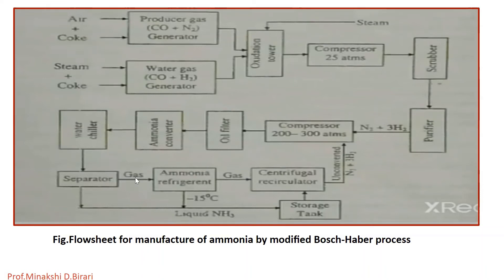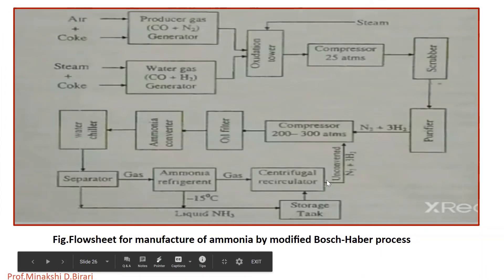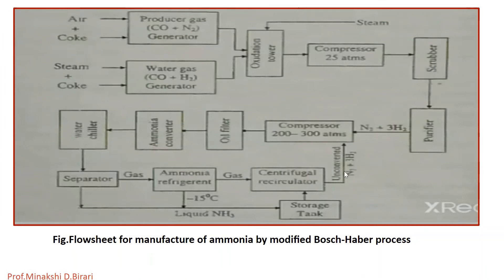The exit gases contain about 8% ammonia and uncombined N2 and H2 gases. These gases are cooled by passing through a heat exchanger, with most of the heat given to incoming gases in the converter. The gaseous ammonia is then separated from N2 and H2 by condensation, first with water cooling and then by ammonia refrigeration at −15°C. The unreacted N2 and H2 are recycled.